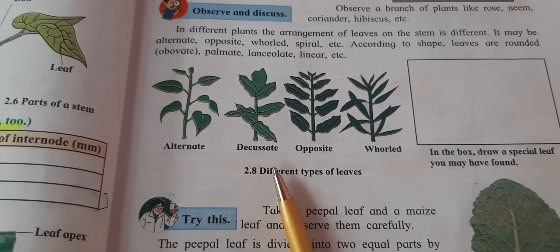During photosynthesis, plants consume carbon dioxide and release oxygen. During respiration, they consume oxygen and release carbon dioxide. The inhalation and exhalation of gases are carried out by the small pores called stomata. When there is heat, the stomata open and close accordingly.